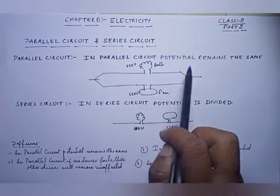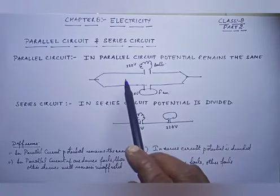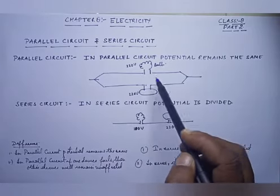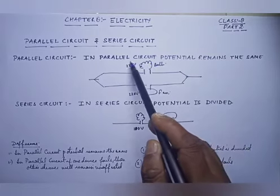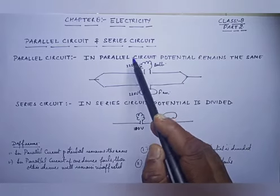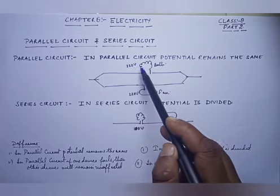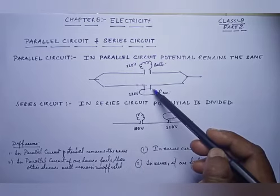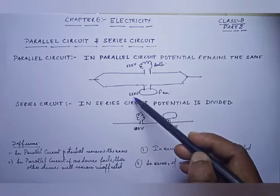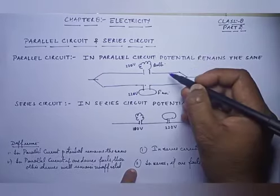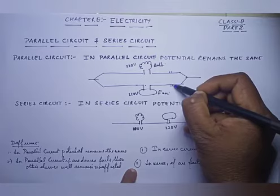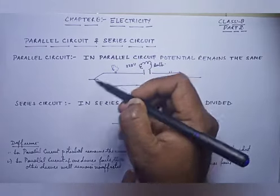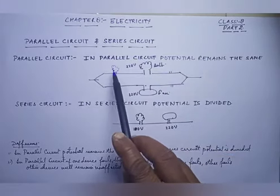In parallel circuits, potential remains the same. It means that if this is a parallel circuit and if we are going to connect as many equipments as we want, the potential will remain the same — that is 220 volt. Suppose this is a bulb, so there will be a potential of 220 volt. In the same way, if a fan is connected over here, it will also have 220 volt. Each equipment attached over here is going to have the same potential, that is 220 volt.